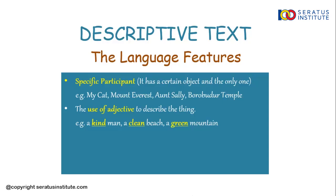The next language feature is the use of simple present tense. Why do we use simple present tense here? Because it is to describe the facts from the object. Kenapa kita harus pakai simple present tense? Karena di descriptive text sebagian besar adalah describe the facts from the object — misalnya tinggi dari Candi Borobudur, dibuat dari apa, bentuknya seperti apa. If you want to know more about simple present tense, click the next video.